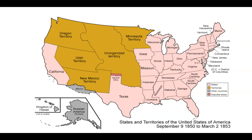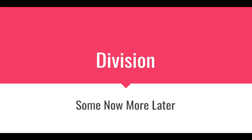The Gadsden Purchase area—what is today New Mexico and Arizona—was controlled by the Mexican government. Russia controls Alaska, and Hawaii is its own kingdom. That's what the United States looks like at this time. To fully understand what's going on, we need a discussion of what creates the division that leads to the fighting of the Civil War.